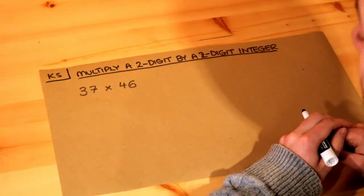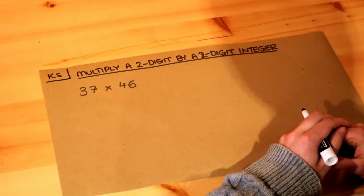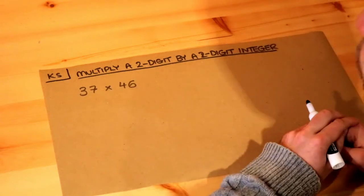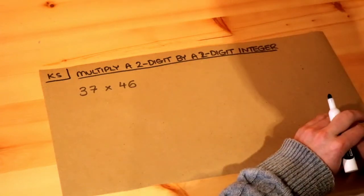Hello and welcome to this Dr Ross Mass's key skill video on multiplying a two-digit integer—an integer just means whole number—by a two-digit integer.